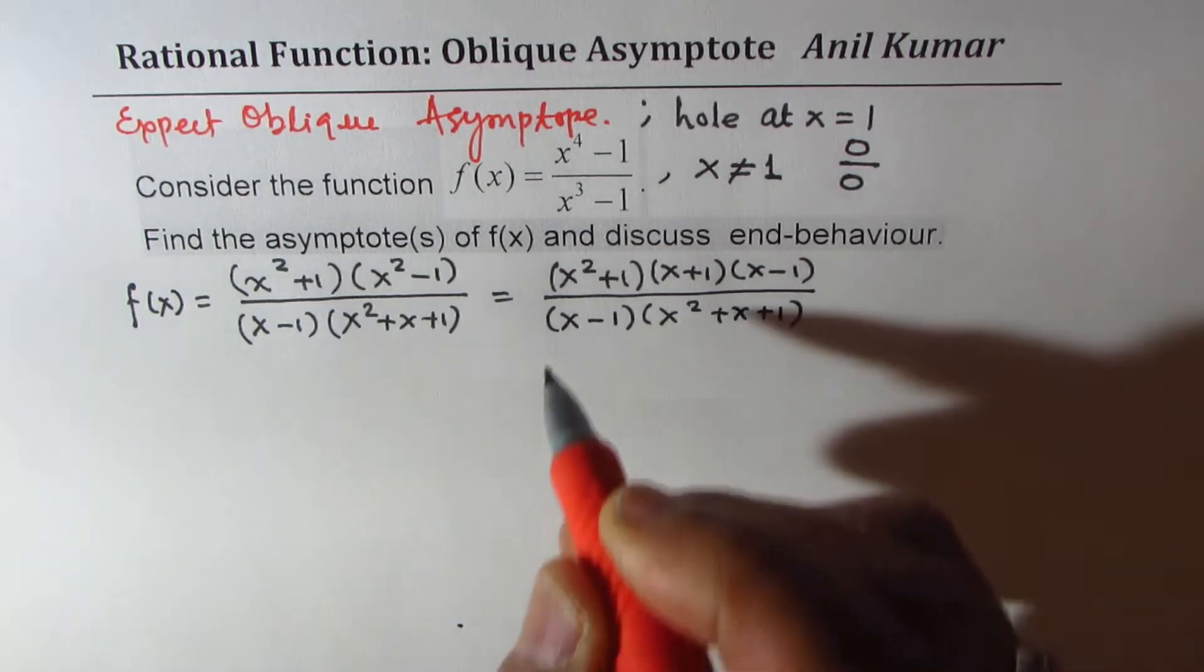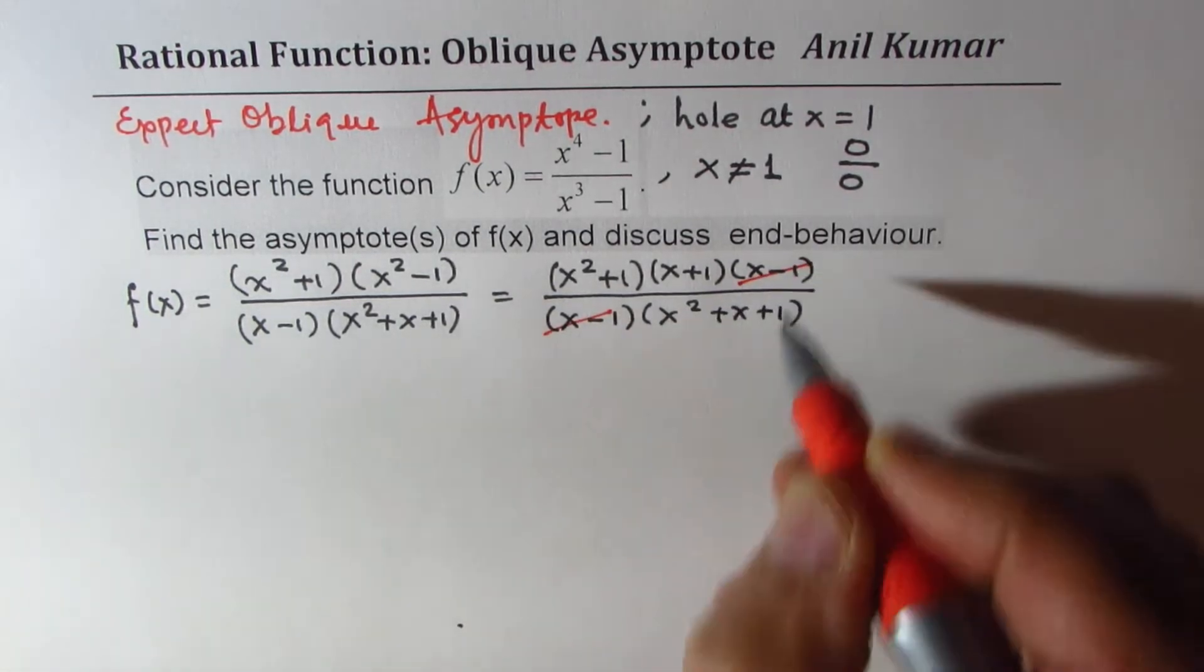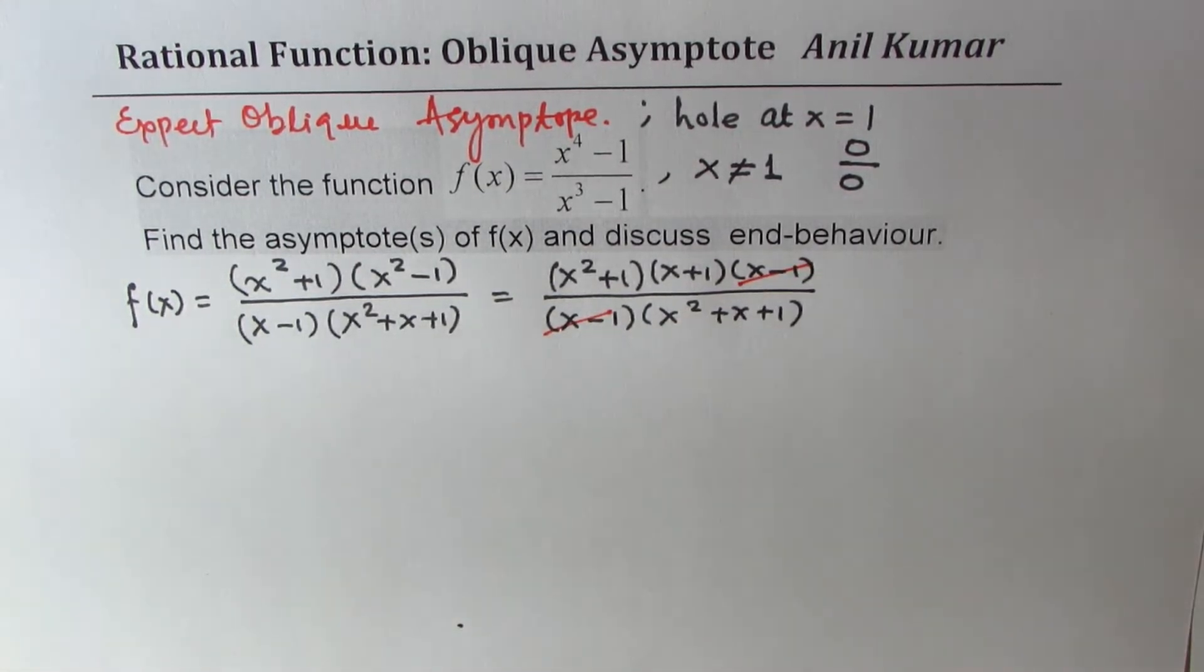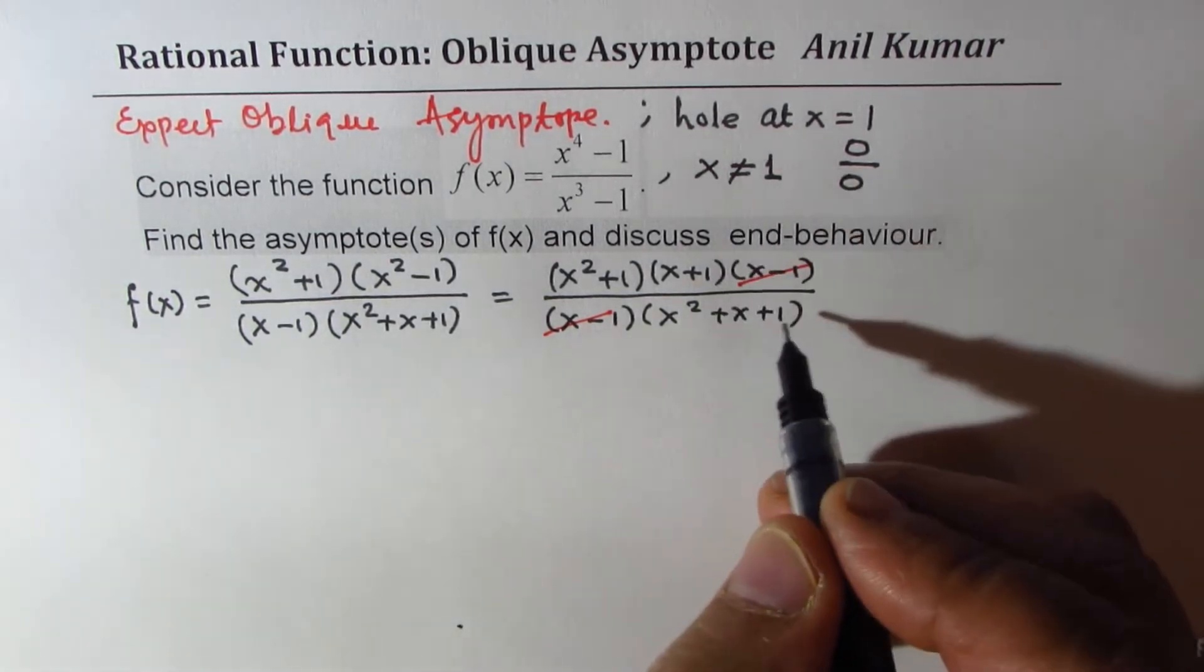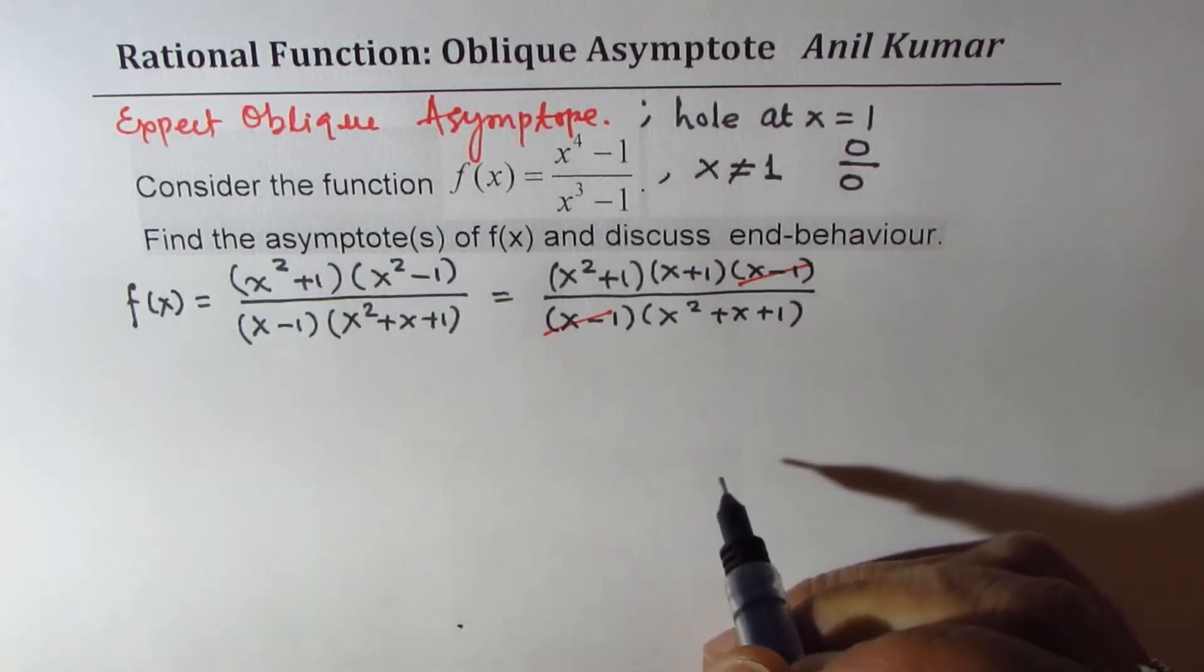Now, one of the factors, as expected, cancels out x equals 1, leading to the hole. So that is very clear. So this is what you get.